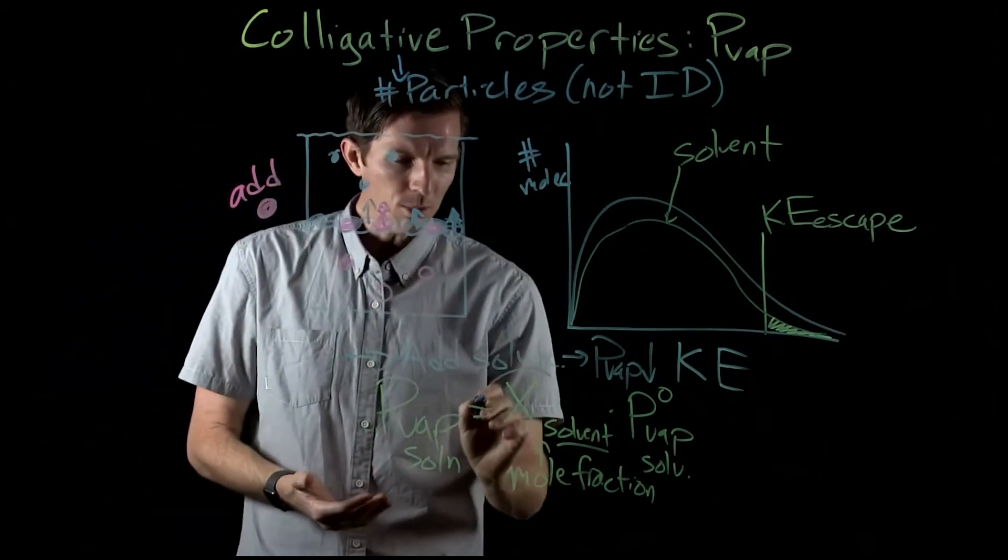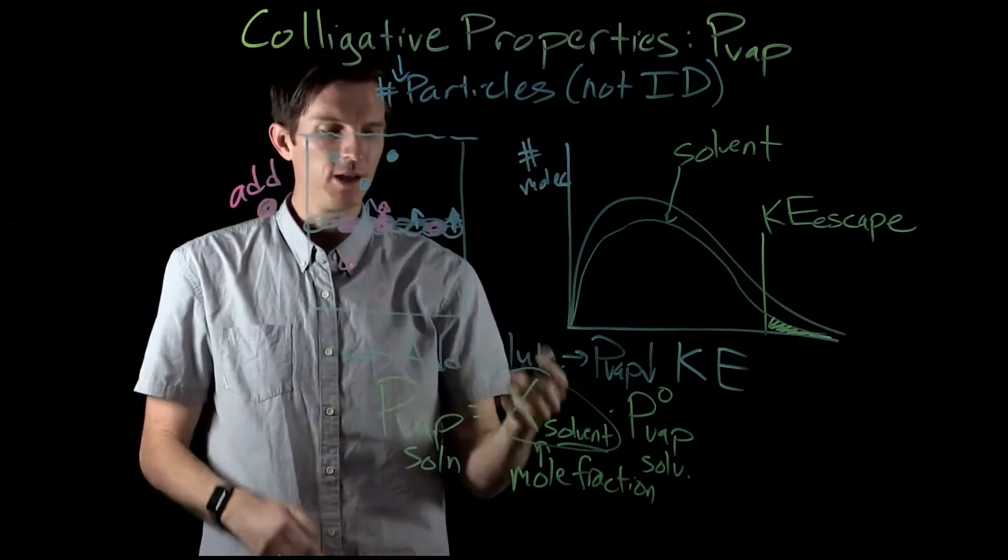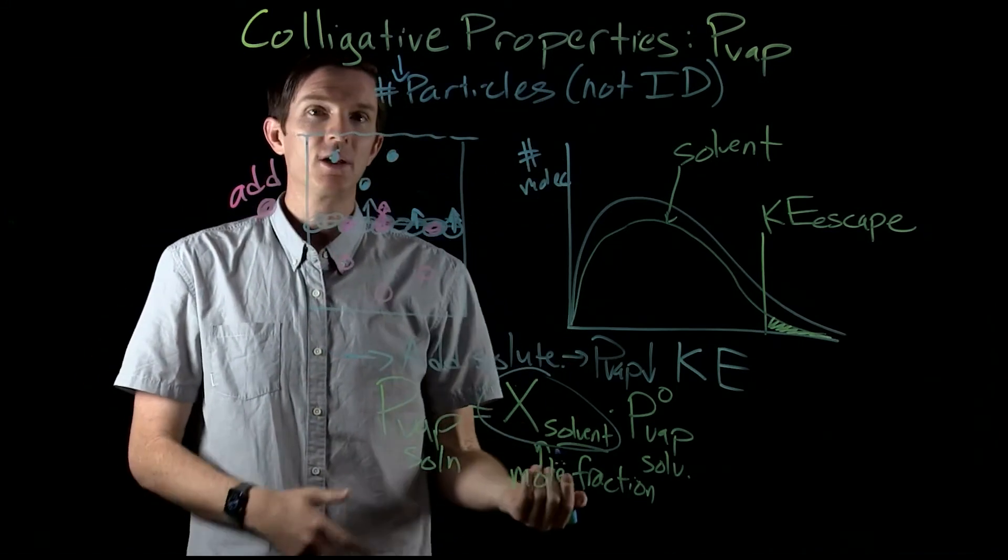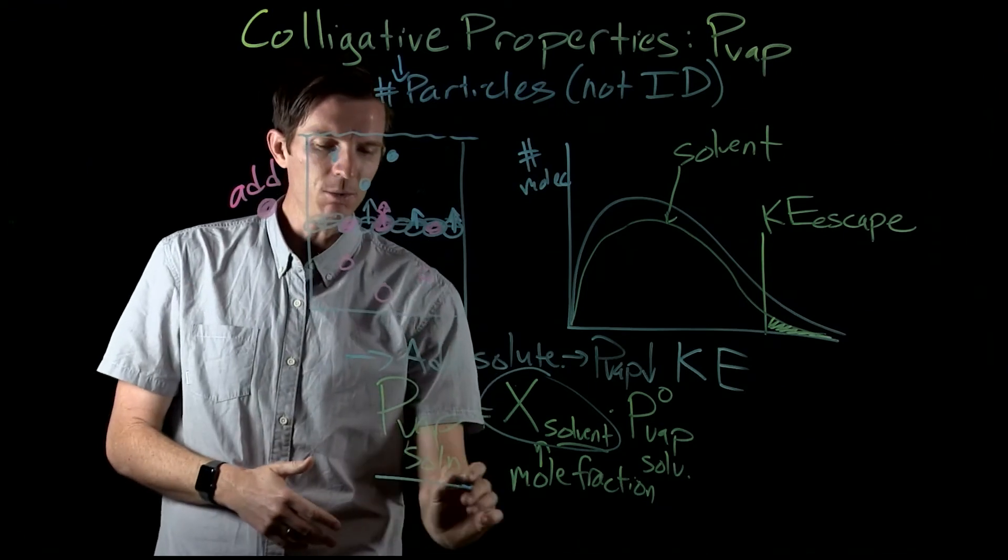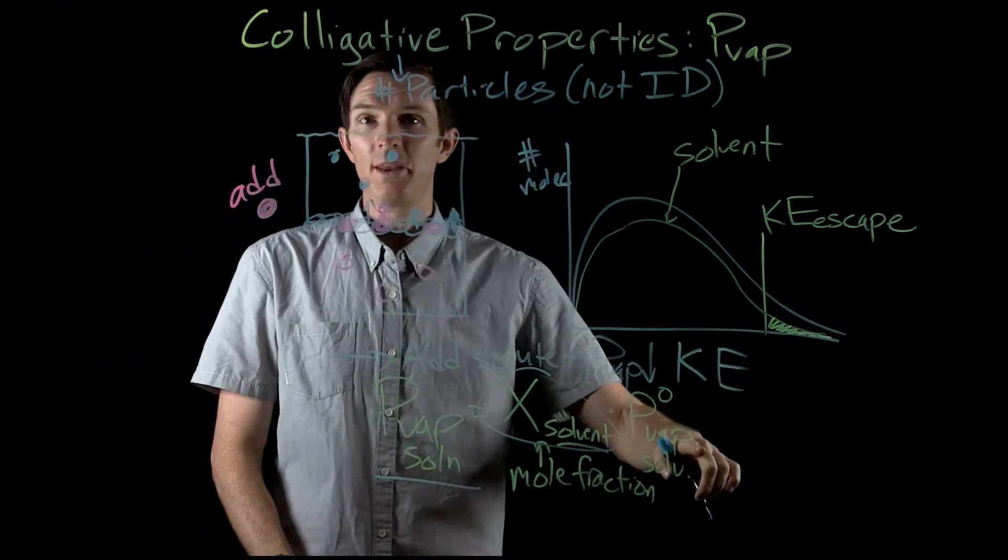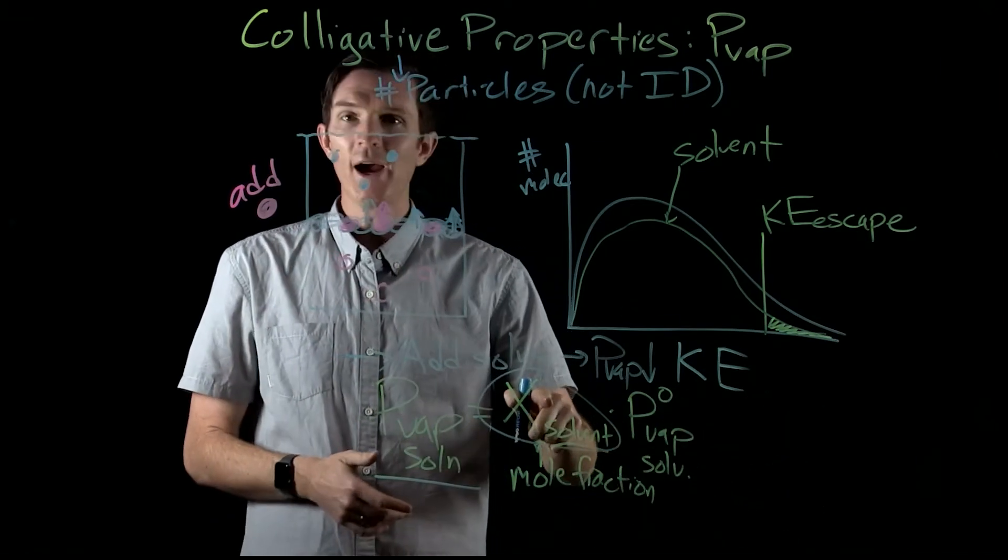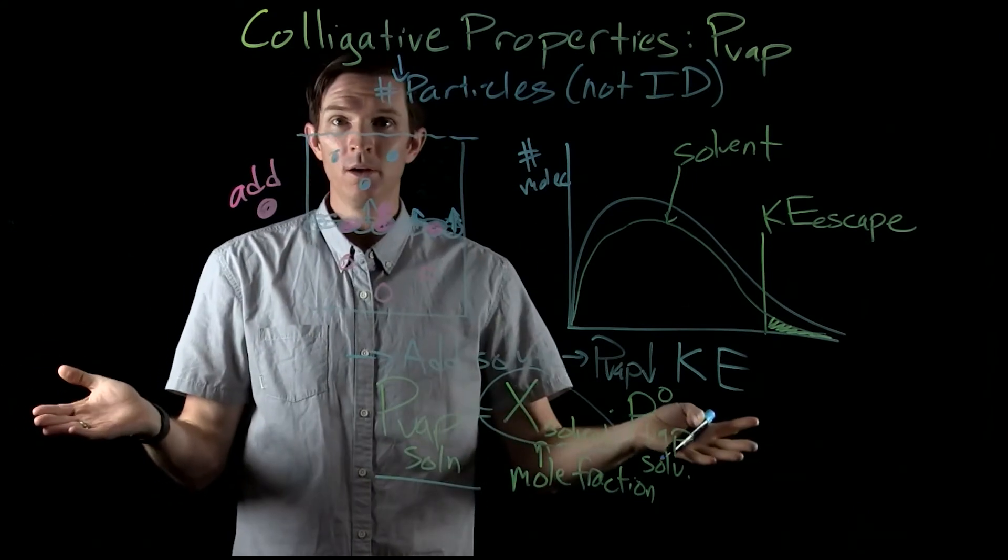So we want to know what proportion will actually be present on the surface that can escape. Well, that's our mole fraction. And so this is going to give us the ability to calculate the vapor pressure created by a solution relative to the vapor pressure of the pure compound at that specific temperature.